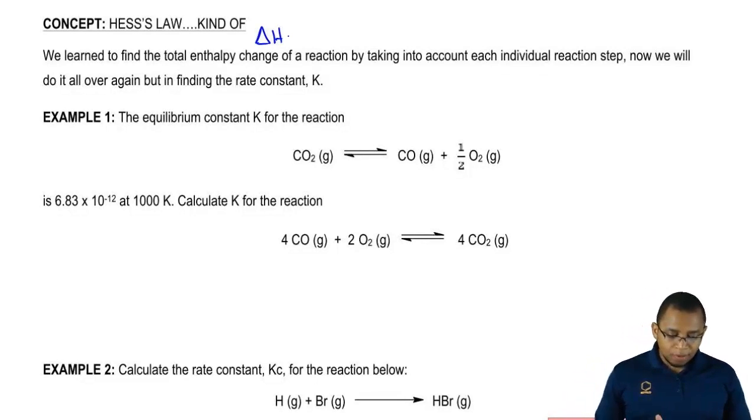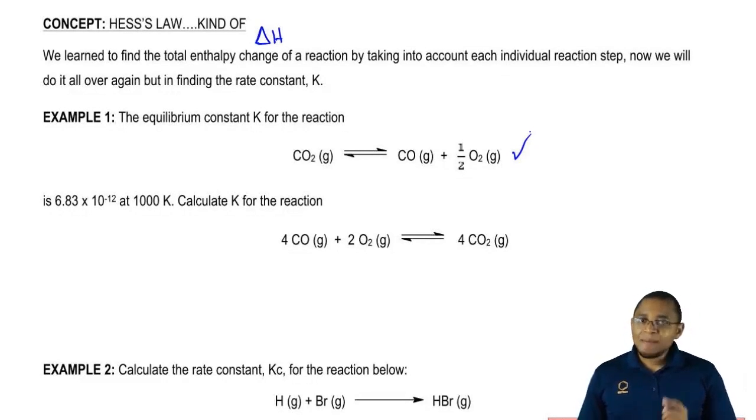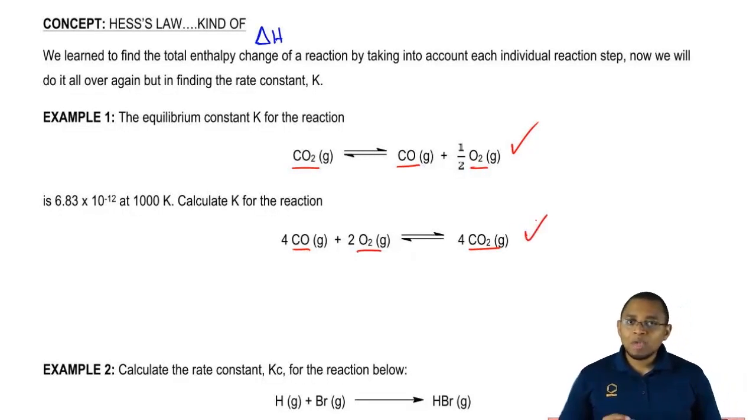We're going to say the equilibrium constant for the reaction, this reaction here, is 6.83 times 10 to the negative 12 at 1000 Kelvin. Now I'm asking you to find a new K for this new reaction. What you should realize here is that both of these reactions are the same. They both have CO2, they both have CO, they both have O2, they're the same exact equation. The only difference here is I changed and manipulated the one on the top so that it now looks like this one. What we have to figure out is what changes that I do and what effect will that have on the equilibrium constant K.